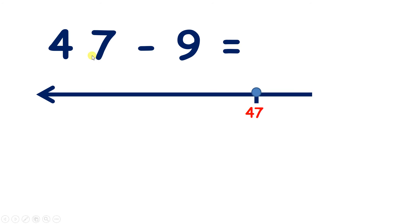Well, we can easily subtract 10, but that would be one too many, so we need to subtract 10 and then add 1. So if we subtract 10 from 47, we have 37, and now adding 1 gives us our answer 38.